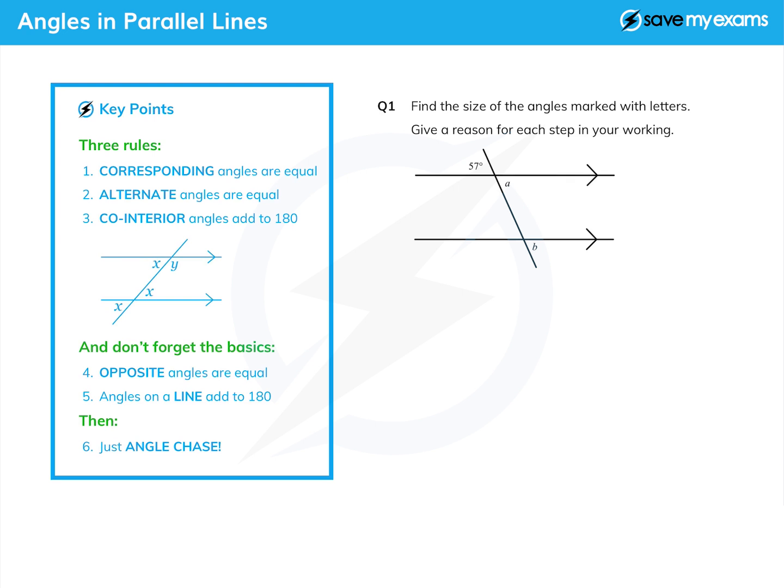Let's do a couple of questions. One quite straightforward and one a bit harder. Here's the straightforward one: find the size of the angles marked with letters. So we need to find a and we need to find b. And then the crucial bit: give a reason for each step in your working. So fairly clearly, a is equal to 57 degrees, but it's the reason you'll really get the marks for. And in fact, that is just one of the two basic things—opposite angles are equal. I'm just going to say opposite angles. That is enough because, of course, I've shown I know they're equal by making them both 57.